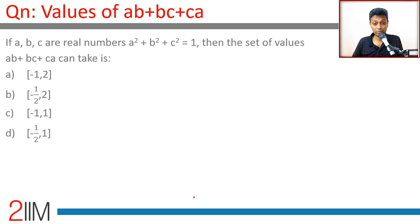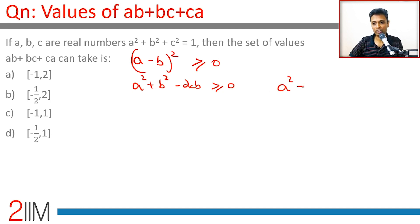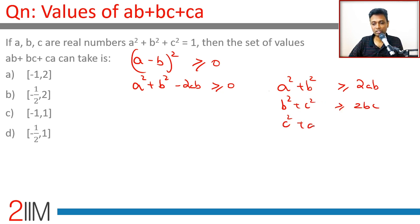If a, b, c are real numbers and a² + b² + c² = 1, find the set of values that ab + bc + ca can take. We use the fact that (a - b)² ≥ 0, so a² + b² - 2ab ≥ 0, giving a² + b² ≥ 2ab. Similarly, b² + c² ≥ 2bc, and c² + a² ≥ 2ca.